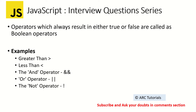The list goes on. You can use greater than or equal to, less than or equal to, double equal to, triple equal to, and the conditional operator. Any operation that results in true or false is called a Boolean operator.